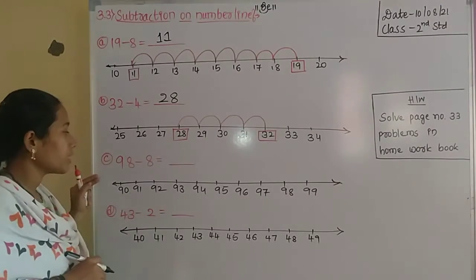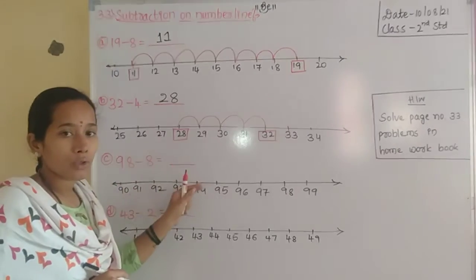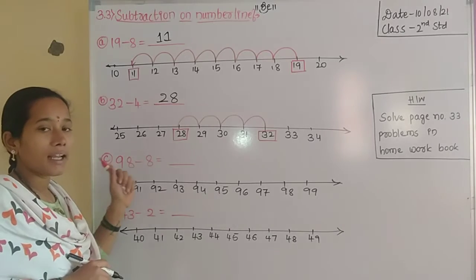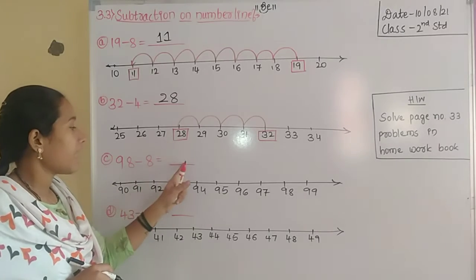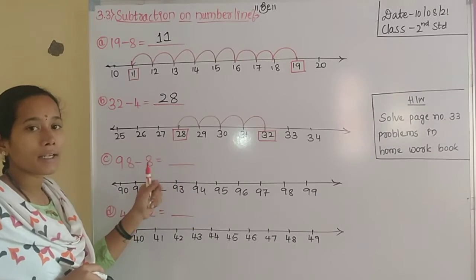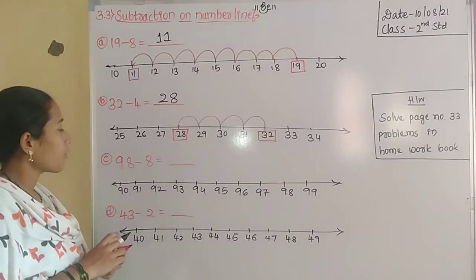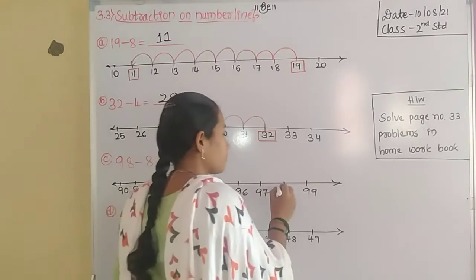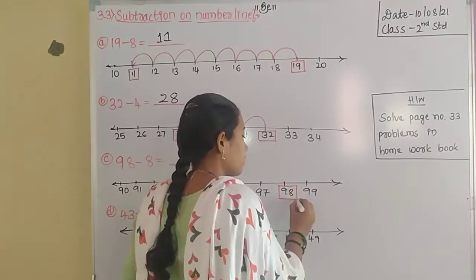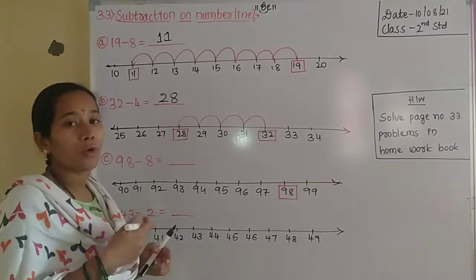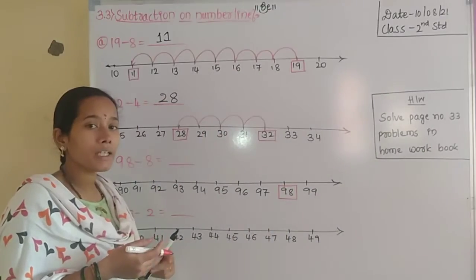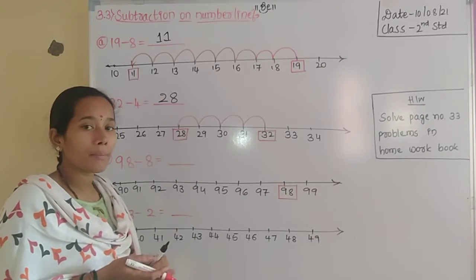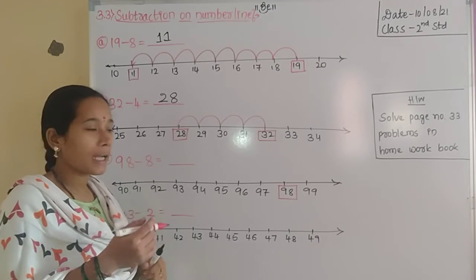Next, see the third problem: 98 minus 8 equals dash. Here the minuend is 98 and the subtrahend is 8. The answer we find is called the difference. The first step is to mark 98 on the number line. Next we move backward steps — how many steps? 8 steps from the minuend, which is 98.